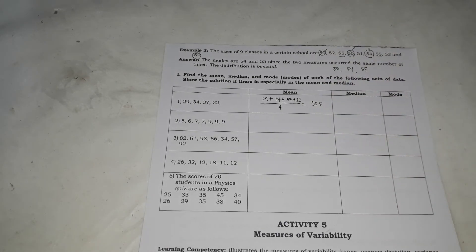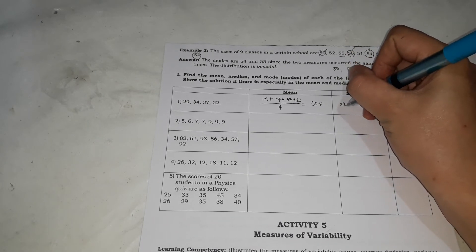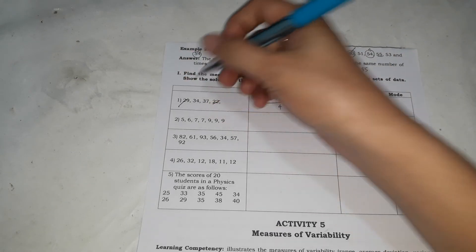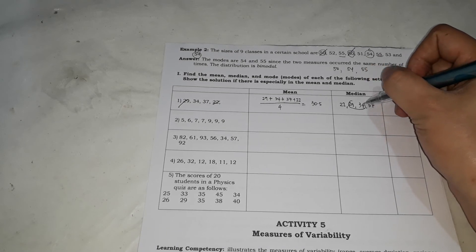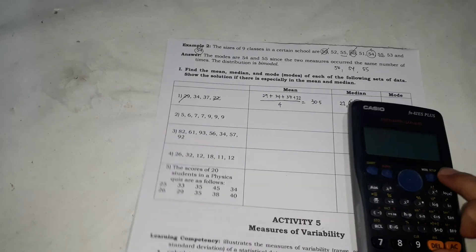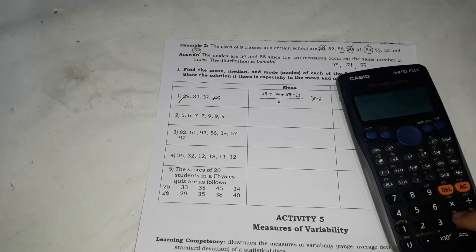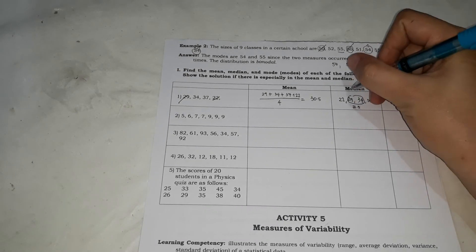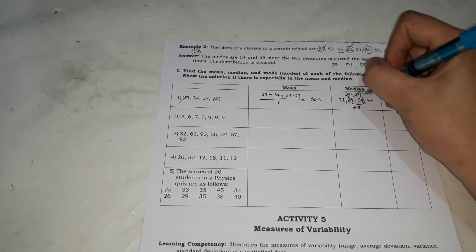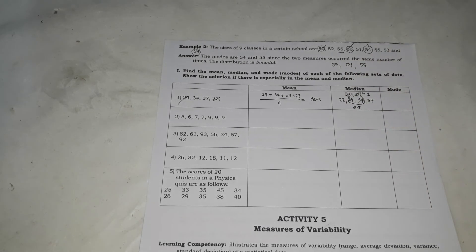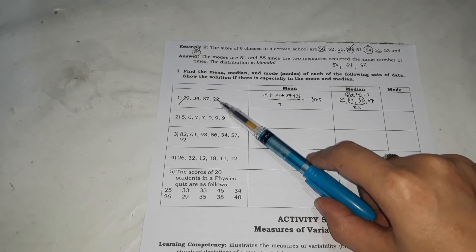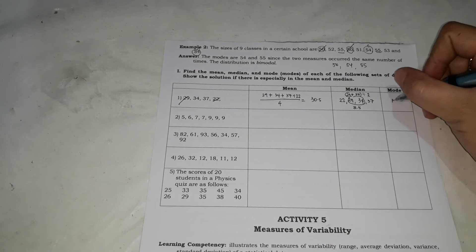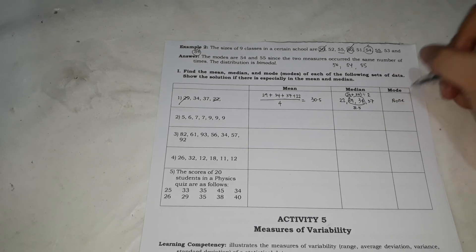For median naman, all you have to do is arrange them. Ang pinakamababa si 22. Sunod si 29. Sunod si 34. Sunod si 37. Yung nasa gitna, dalawa. So 29 saka sa 34. So ang gagawin natin, i-plus silang dalawa. 29 plus 34, divide mo by 2. Which is 31.5. Next, for mode, tingnan natin kung sino may pinakamaraming inulit. Kasi, diba, once lang sila lahat, walang inulit na number. So there is no mode. So the mode is none.